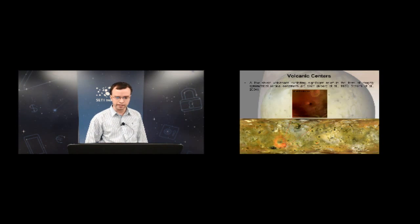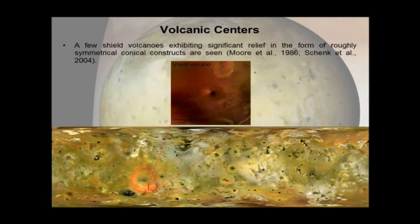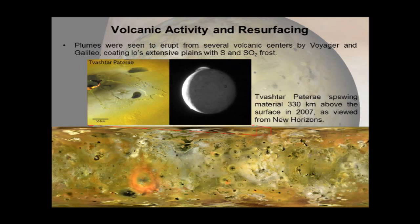Aside from Pateri, the other main type of volcanic centre is roughly symmetrical shield volcanoes showing significant positive relief. As a consequence of having so many active volcanoes, IO's surface is resurfaced very frequently, giving it the youngest surface of any body we know of in the solar system. One way it's resurfaced is through plumes — such as the plume from Tvashtar Pateri caught by New Horizons in 2007 — which coat IO's plains with sulphur and sulphur dioxide frost.